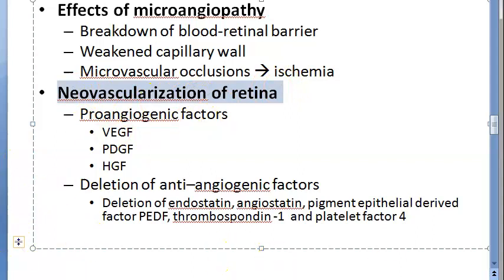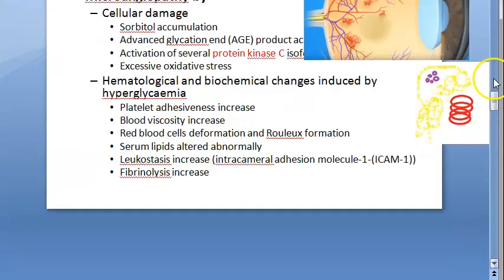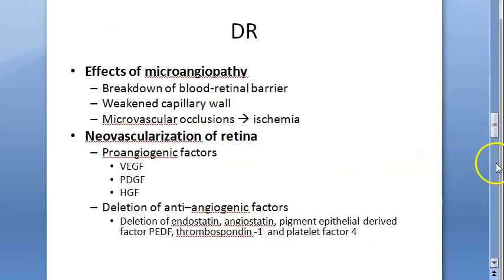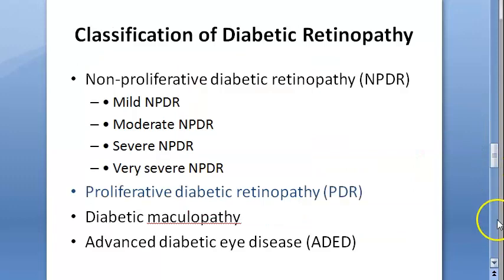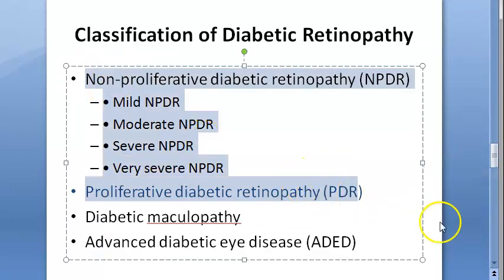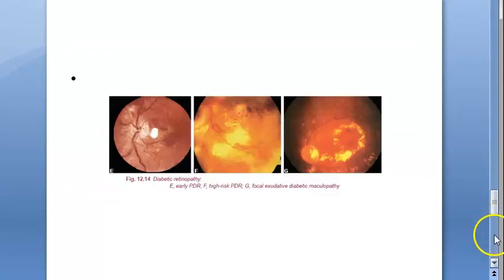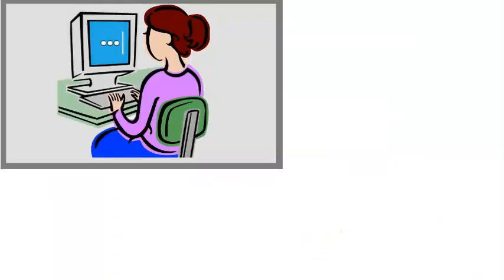So this story has stopped at this level where we have completed the pathogenesis. In the next video we have to look at the classification and the details of each type of diabetic retinopathy. It's going to be a long journey - let's continue in the next video. That's all for now. Bye-bye.